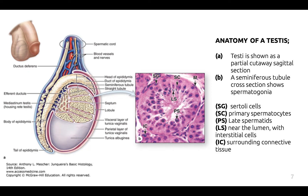Here is the anatomy of a testes. Sertoli cells help in the process of spermatogenesis, which is the development and continuous, plentiful production of sperm. Interstitial cells, also labeled as LS, produce androgens including the testosterone hormone. IC refers to the surrounding connective tissue.